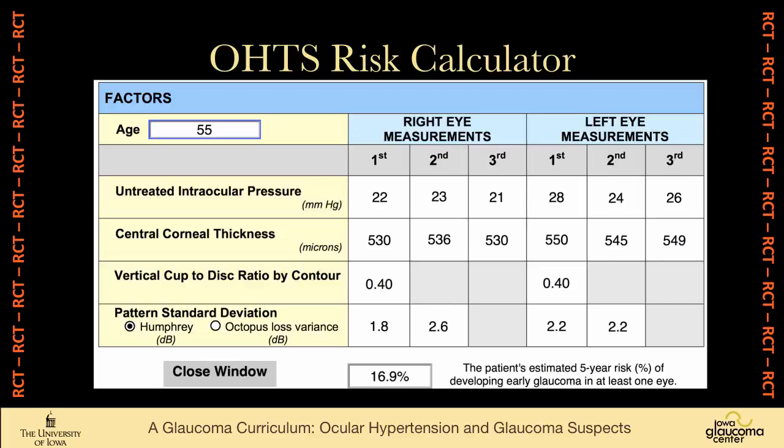And this is what it looks like. A 55-year-old patient with pressures as high as 28 millimeters of mercury, sort of average corneal thicknesses, small cup-to-disc ratio, and pretty normal visual fields has a 16.9% five-year risk of developing early glaucoma in at least one eye.